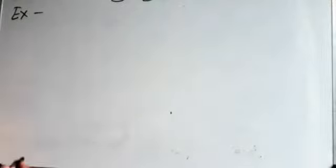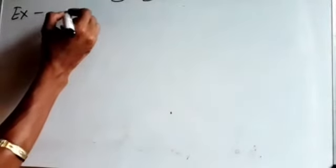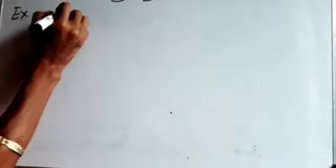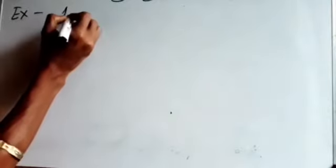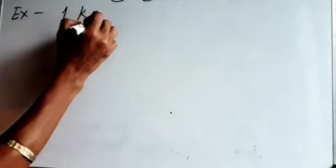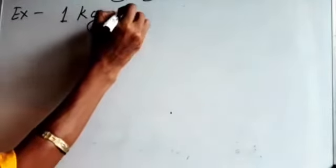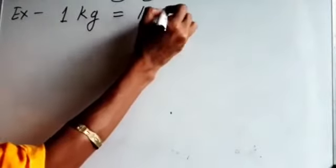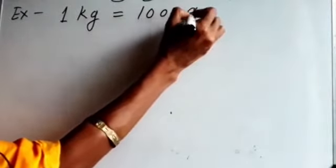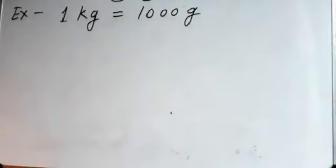Now, here all the quantities are given in kilogram and gram. So students, when we solve the examples, you should know the basic conversions from kilogram to gram. What is the basic conversion? 1 kilogram is equal to 1000 gram.